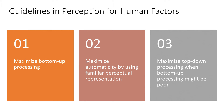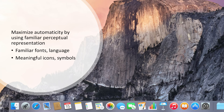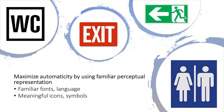Secondly, we want to maximize automaticity by using familiar perceptual representations. Ideally, we don't want to have to read a label to know what something does. For instance, we know that blue bins are for recycling. We want to use familiar fonts, language, icons, and symbols to make it easy for users to select the correct response. We can see this in computer software interfaces, exit signs over doors, as well as images on bathroom doors to indicate which bathroom it is.